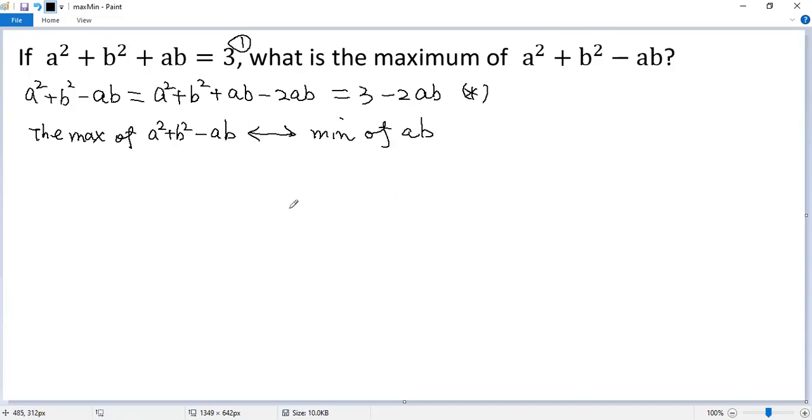To find the minimum of ab, let's use the condition again. Add ab to both sides, so we get a squared plus b squared plus 2ab on the left side, and 3 plus ab on the right side. The left side is a perfect square, so a plus b squared equals 3 plus ab.